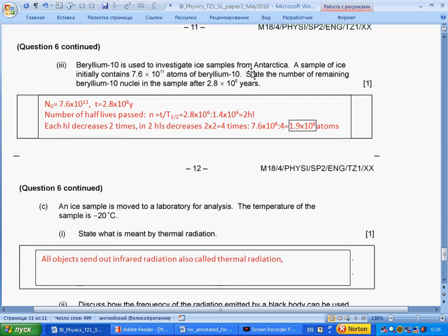Beryllium is used to investigate ice samples from Antarctica. The sample of ice initially contains given number of atoms. State the number of atoms after given time. Initial number of atoms, time passed. Number of half-lives passed: we should divide time by period. We get two half-lives. Each half-life, the number decreased two times. In two half-lives, by two, by two, four times. We get this value.